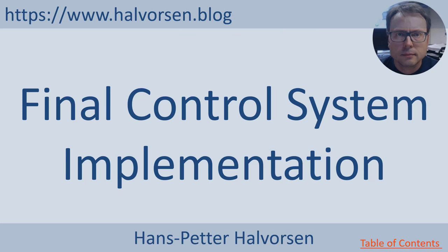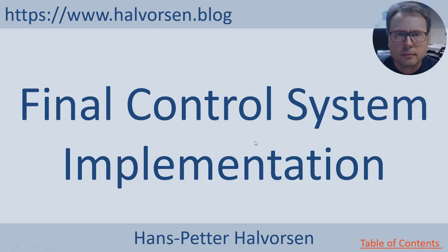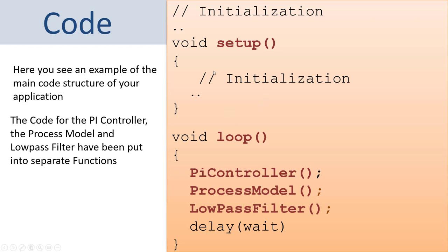Now we have implemented a PI controller, a mathematical model of the process, and the low pass filter. We end up with this basic structure of the Arduino program: on top we have all variables created for the low pass filter, the PI controller, and the mathematical model. In the setup part we initialize some things, and then in the main loop we call the function for the PI controller, the function for the mathematical model, and the low pass filter function. We wait for a given time and then this loops eternally until we unplug the Arduino device.